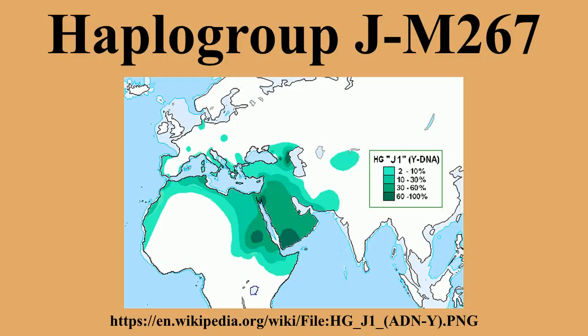Origins. Since the discovery of haplogroup J P209, it has generally been recognized that it shows signs of having originated in Near West Asia. The frequency and diversity of both its major branches, J M267 and J M172, in that region makes them candidates as genetic markers of the spread of farming technology during the Neolithic, which is proposed to have had a major impact upon human populations.